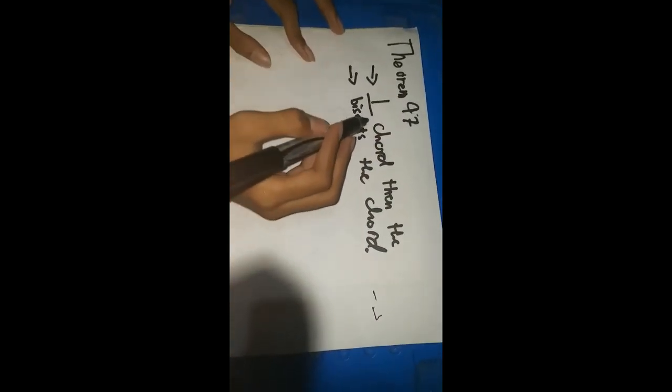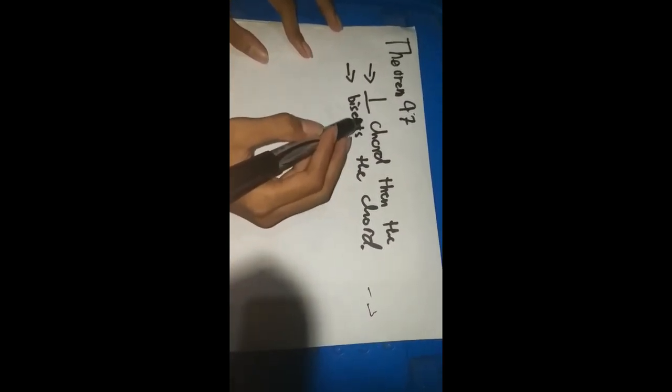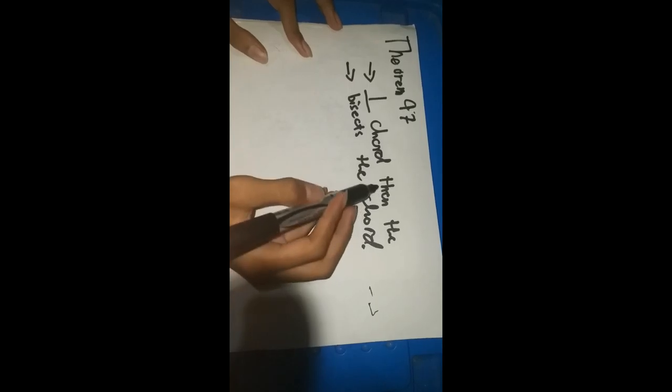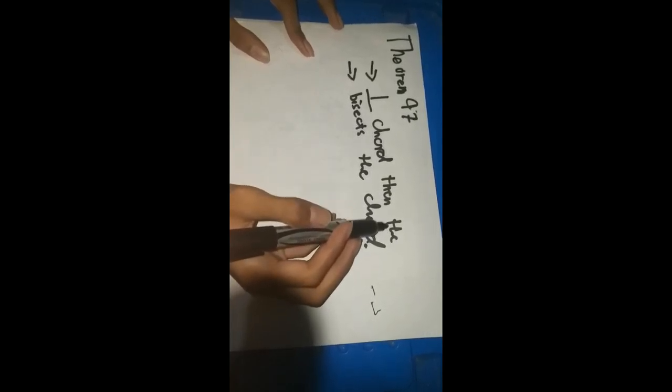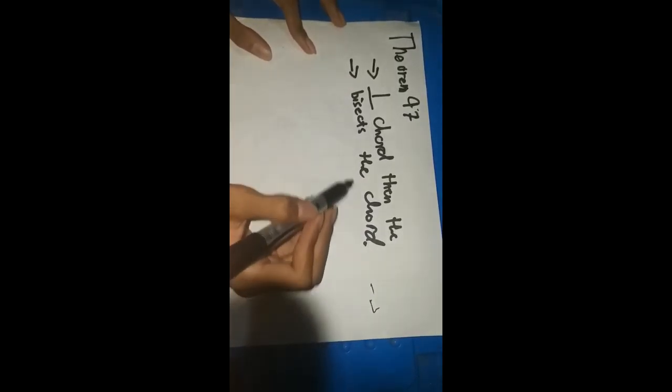I'm going to explain Theorem 97, which states that if a radius is perpendicular to a chord, then the radius bisects the chord.